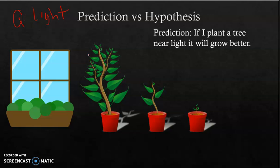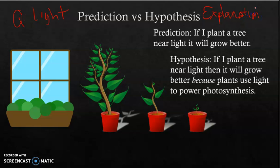A hypothesis is an explanation that you can test. My hypothesis is: if I plant a tree near light, then it will grow better because plants use light to power photosynthesis. I've included the explanation — the why behind my prediction. I've explained myself. From this I can design an experiment to test my hypothesis by putting plants at different distances from light and observing how they grow.